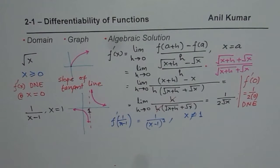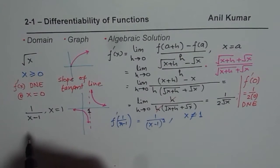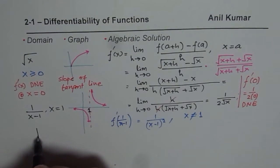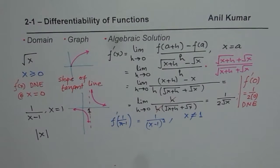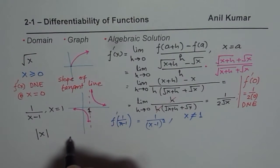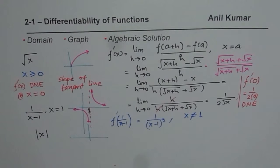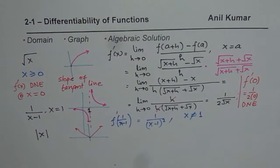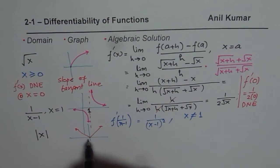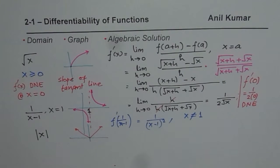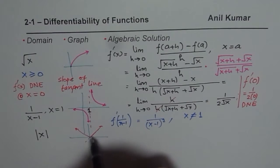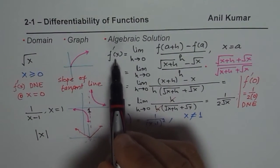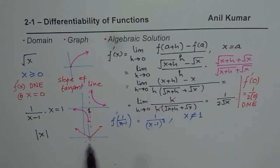Similarly, we have also discussed the absolute value function |x|. Absolute x is a function which has a corner. At 0, this function is not differentiable. Algebraically, you can prove it: if you approach from the right side the slope is positive 1, and if you approach from the left side the slope is negative 1. So the derivative does not exist at x equals 0.